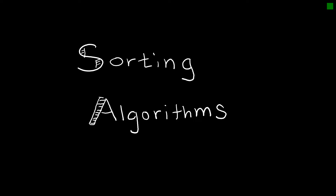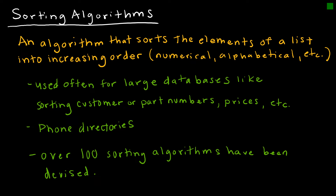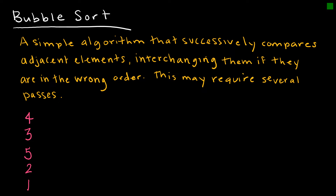Let's take a look at some sorting algorithms. A sorting algorithm essentially sorts the elements of a list into increasing order — numerical, alphabetical, whatever it is we're trying to order. We often use sorting algorithms in large databases, like sorting customer or part numbers, sorting prices, or phone directories by last name. There are over 100 sorting algorithms that exist, but we're not going to look at all of them.